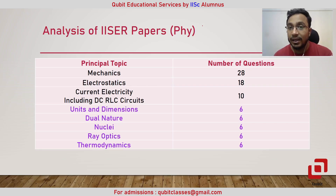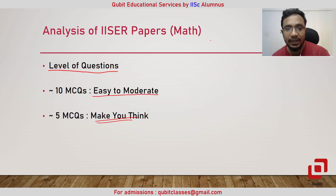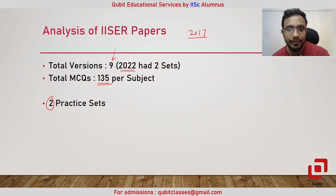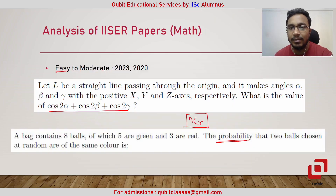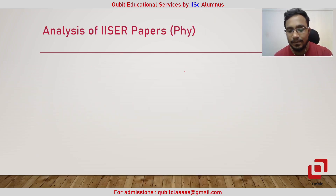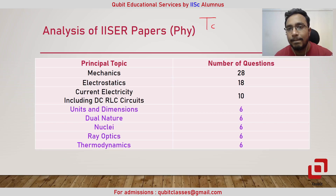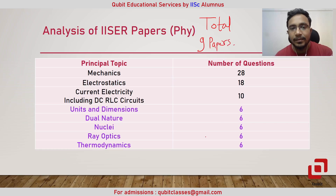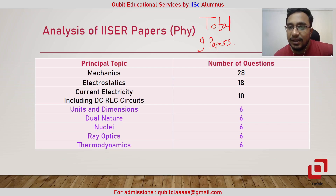There are total nine versions — nine papers — so keep that in mind. There have been at least three questions on mechanics per paper.